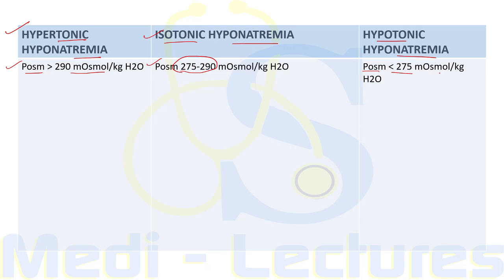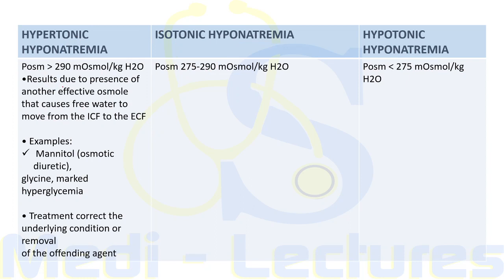Hypertonic hyponatremia is due to the presence of another effective osmole — such as mannitol, glycine, or marked hyperglycemia — that causes free water to move from the ICF to the ECF, resulting in dilutional hyponatremia. Treatment involves correction of the underlying condition or removal of the offending agent.